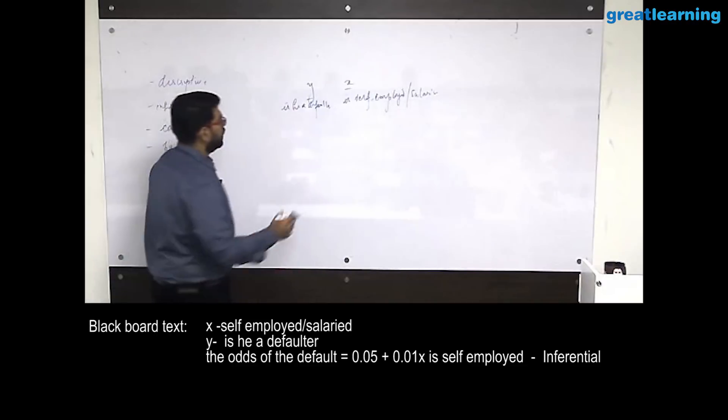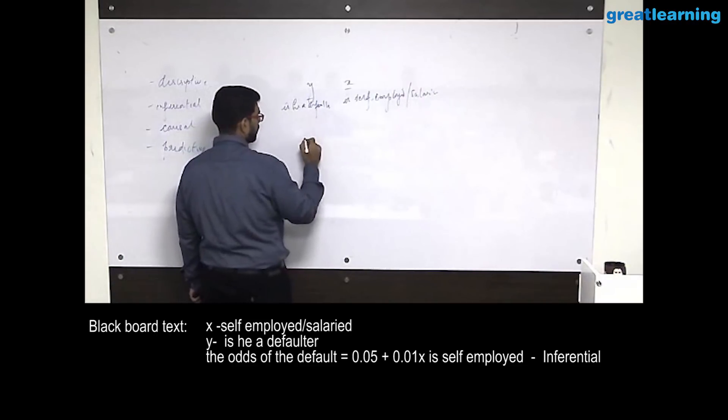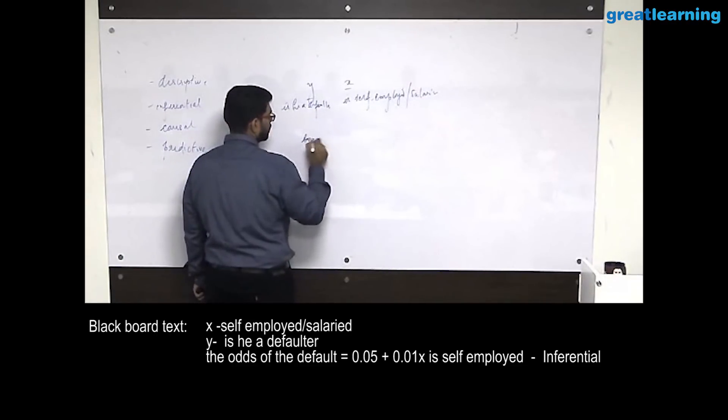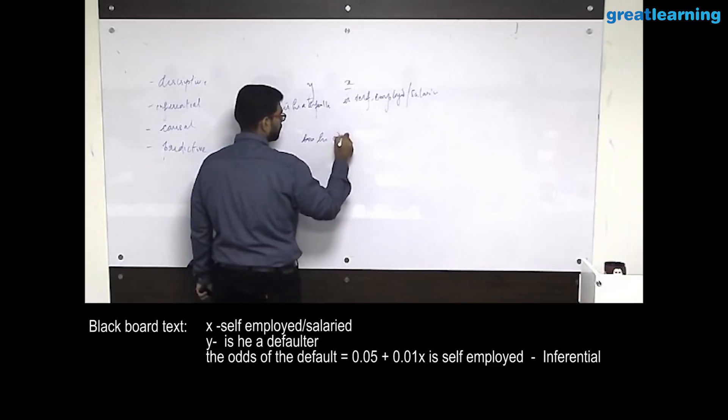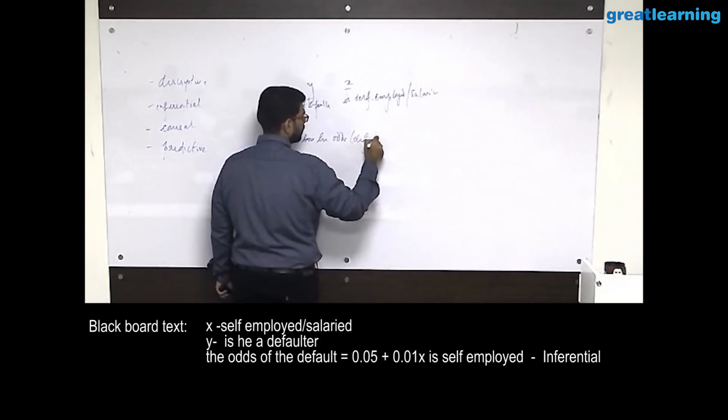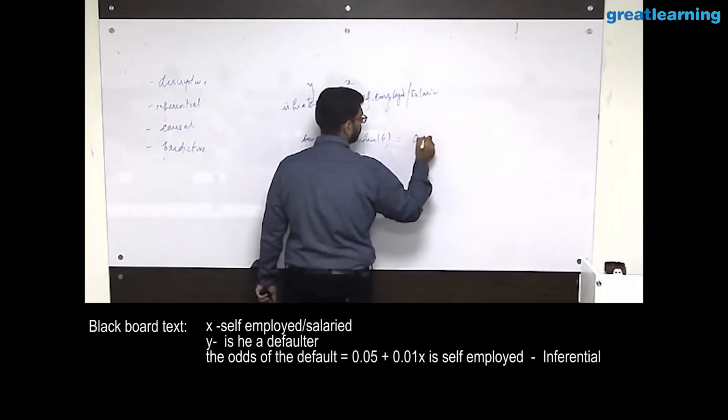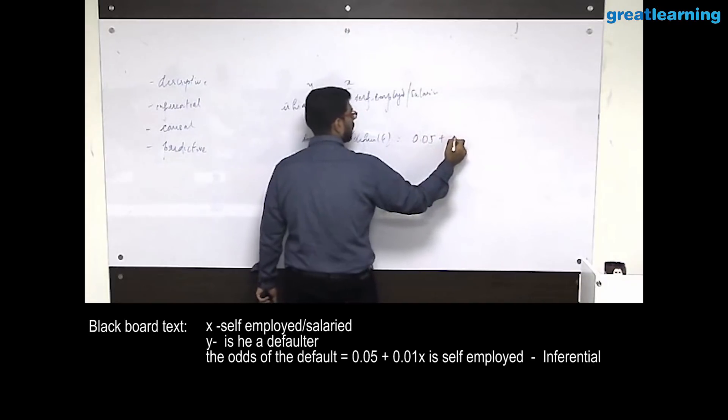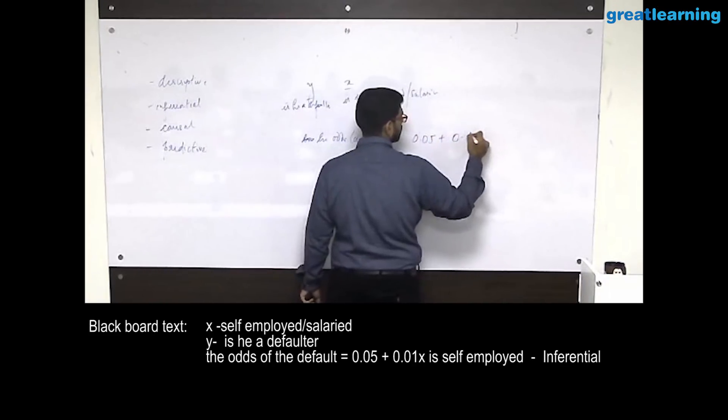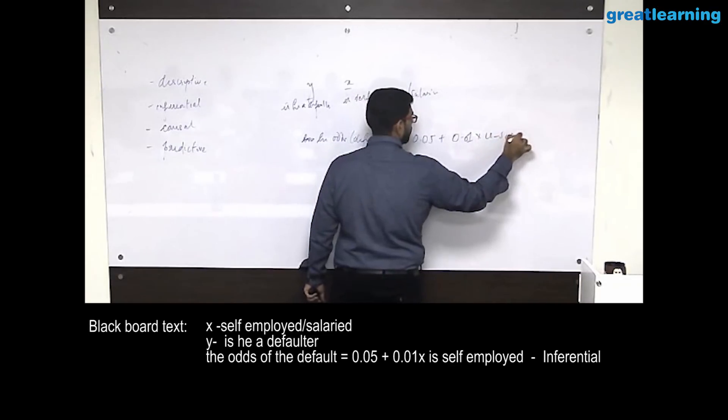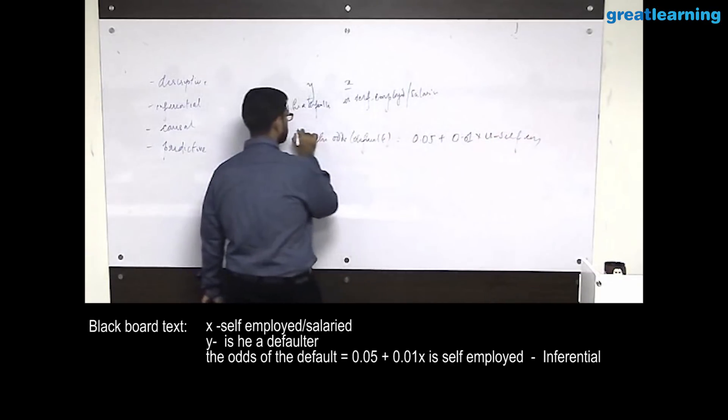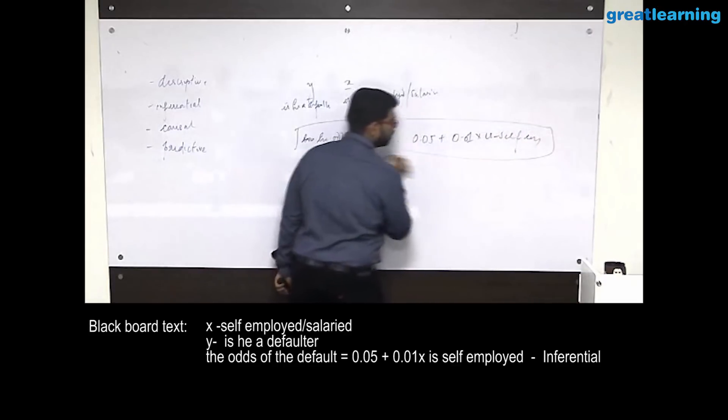You build an inferential model. Let's say I'm doing a logistic regression. I say the odds of the default is 0.05 plus 0.01 times is self-employed. So let's say this is the model. This model is what I get from an inferential model.